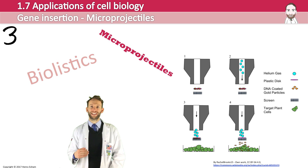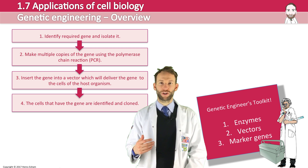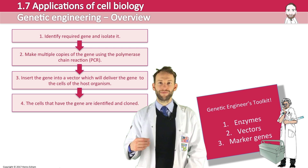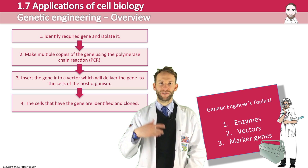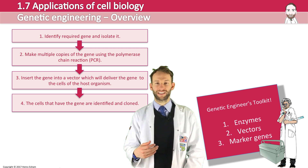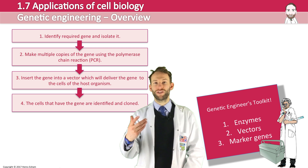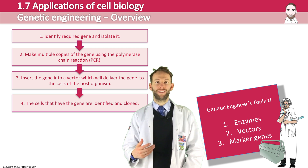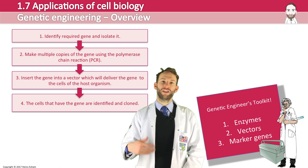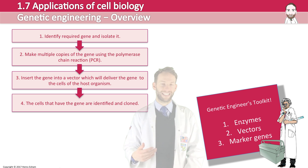To go back to the genetic engineering overview: we've identified the required genes and isolated them, then made multiple copies using PCR, then inserted the gene into a vector, and then once you've done that, you just need to multiply the organism that has it in.